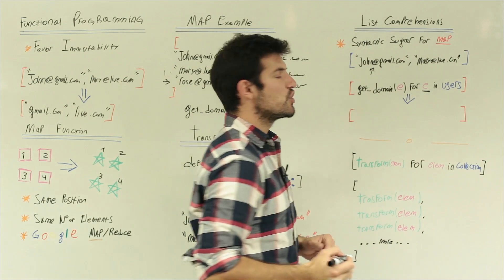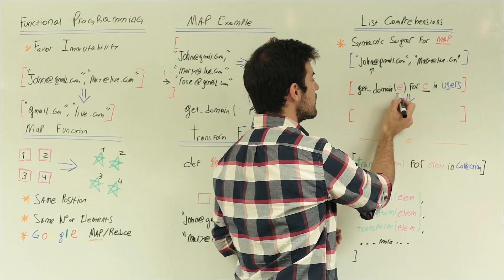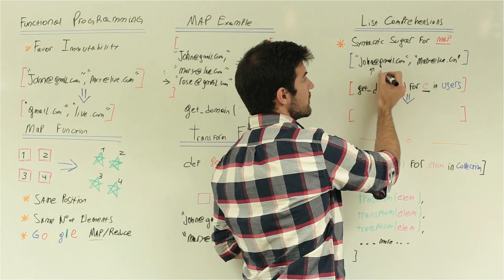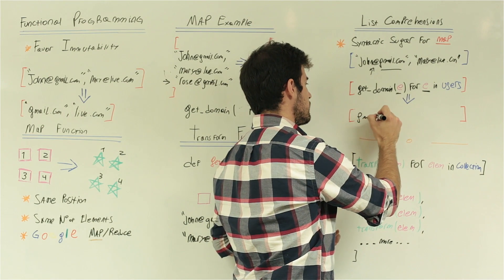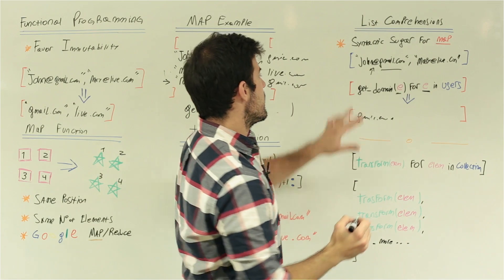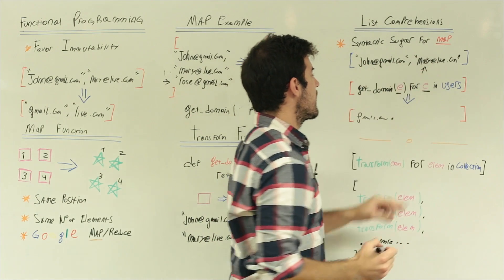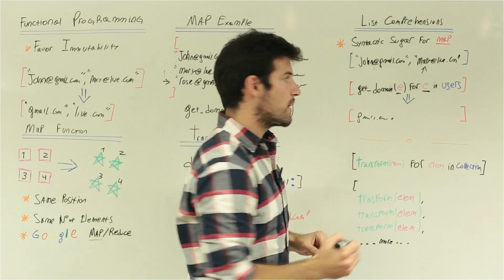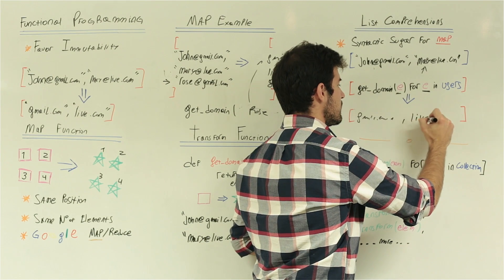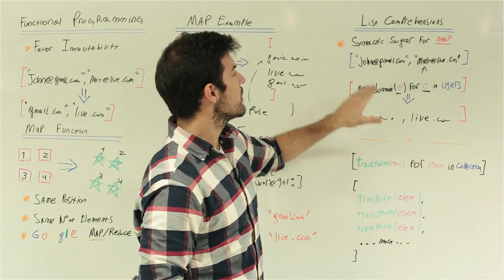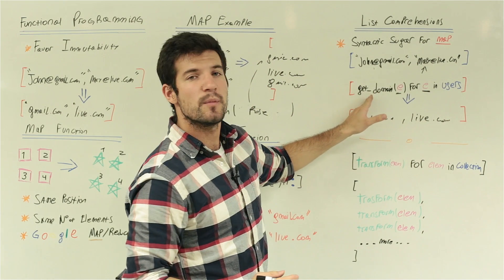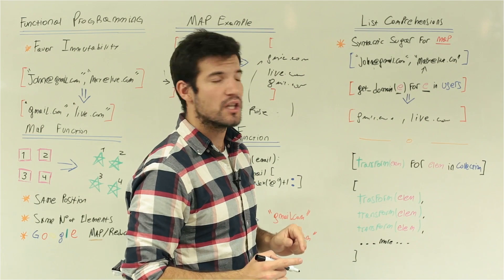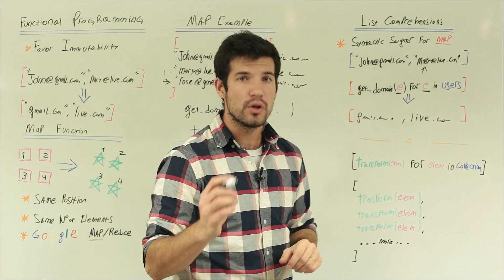E, when we start, is going to be the value tied to Sean — so E is Sean@gmail.com and we're applying the get_domain function to E, which gives us gmail.com. Now we move the pointer to the second element, Mary, and E points to mary@live.com. We apply get_domain to mary@live.com and get live.com. We are walking through the original list, applying the transformation to each element, and receiving a new list out. We are not changing the original list, but getting a new collection — an immutable solution.